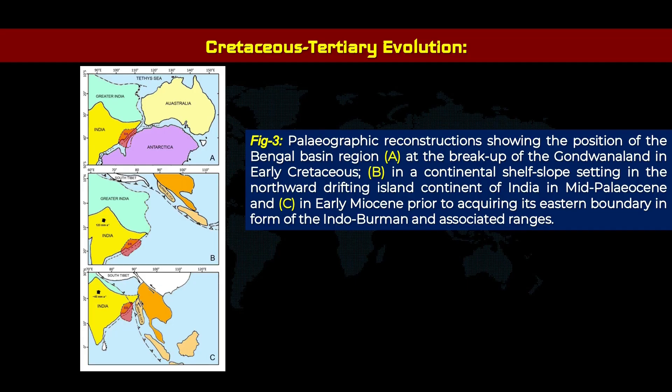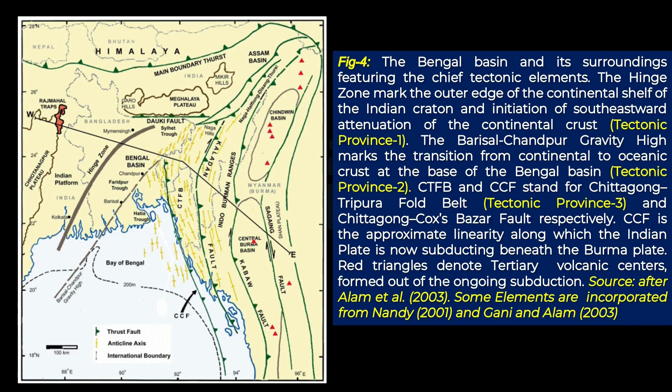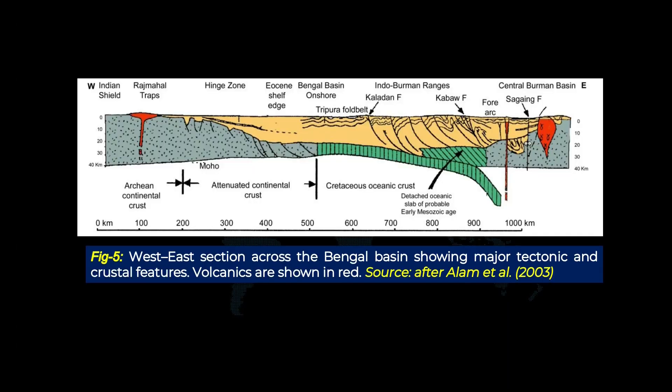In the transitional delta period, Cretaceous–Tertiary evolution occurred. This figure shows the prehistoric position of the Bengal Basin region, which was drifting with the Indian Plate and then acquired its present position. There are three tectonic provinces of the Bengal Delta: Province 1 is on the northwestern side of the hinge zone, Province 2 is in the southern part of the Bengal Delta after the transition zone, and Province 3 is the Chittagong–Tripura Fold Belt (CTFB).